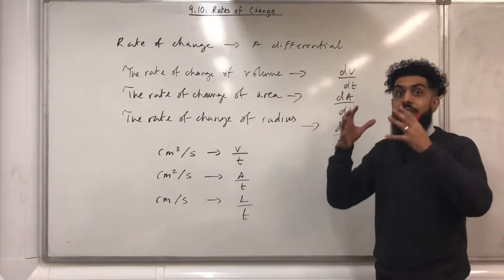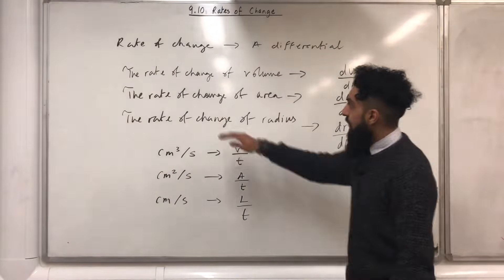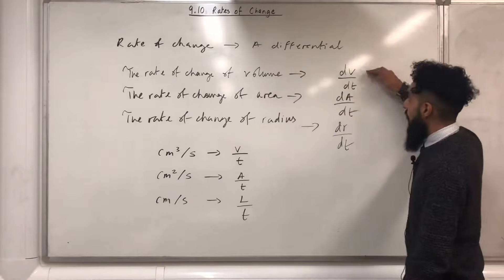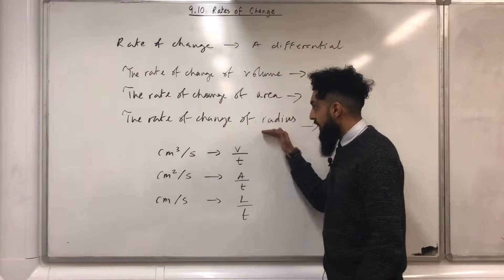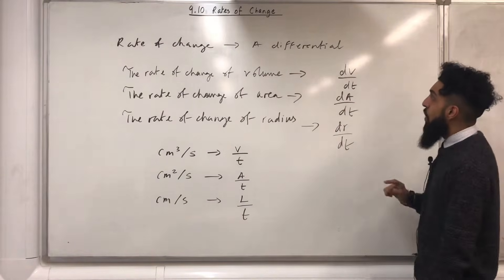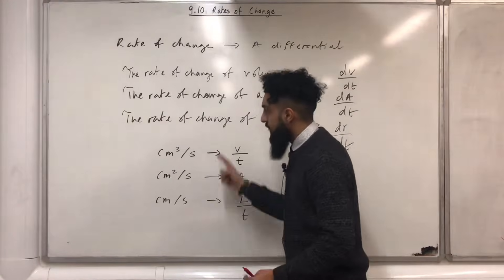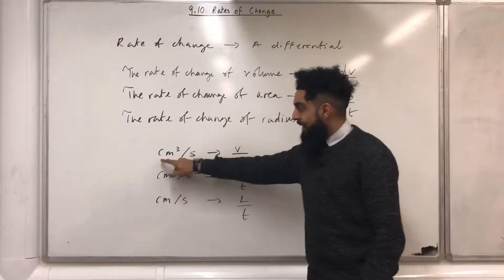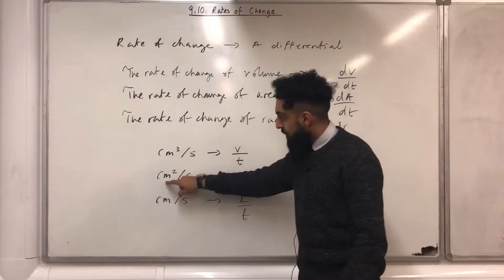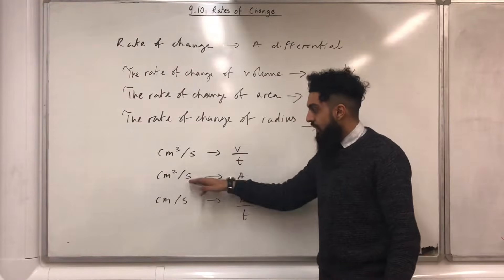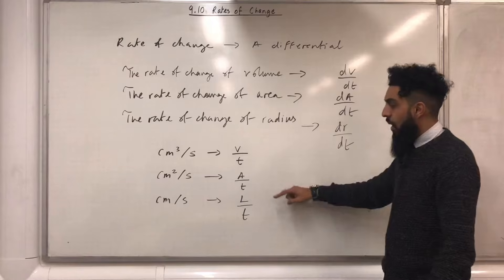The line rate of change represents a differential. So when you come across the line rate of change in the exam, you know that it's a differential. You could have the rate of change of volume, which represents dv over dt; the rate of change of area, which represents da over dt; the rate of change of radius, which represents dr over dt. It will always be over dt. Another tip: look out for the units used in the exam. For example, centimeter cubed per second represents volume over time (v over t), centimeter squared per second represents area over time (a over t), and centimeter per second represents length over time (l over t).